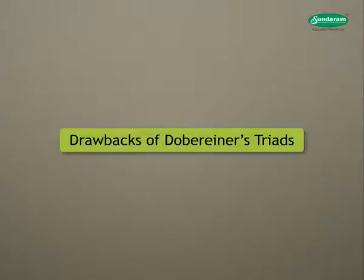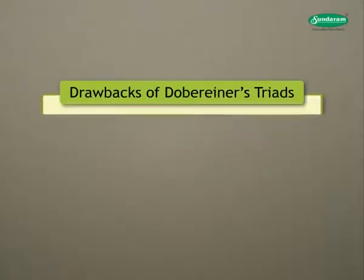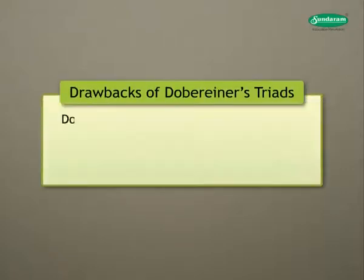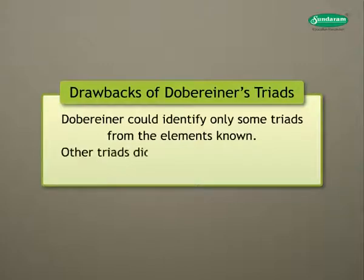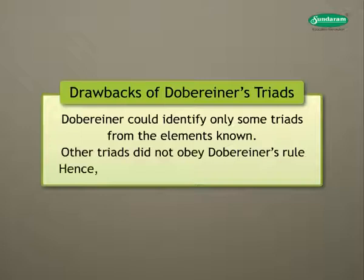There were some drawbacks of Dobereiner's triads. Dobereiner could identify only some triads from the elements known. Other triads did not obey Dobereiner's rule. Hence, the system of triads was not useful.